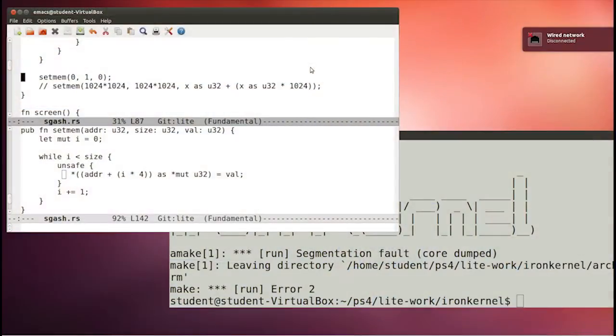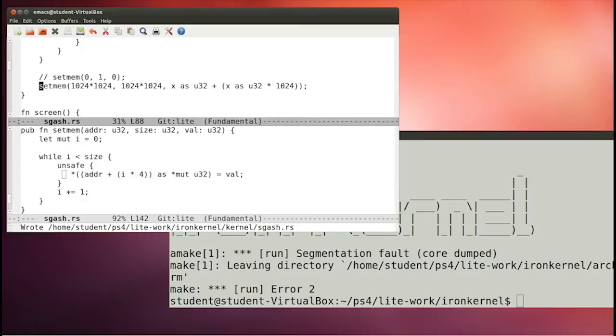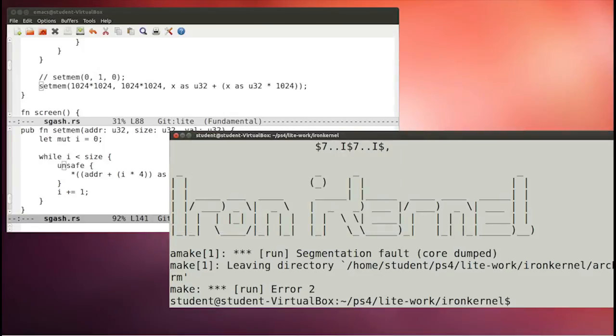So, I'm going to change this code now. Instead of passing in zero, we're going to write at location 1024 squared. And we're going to write for a million spaces. So, if we go back to the set_mem code, it's looping up to size. And we're going to write some values that depend on what the key press was. Okay. So, let's try this.